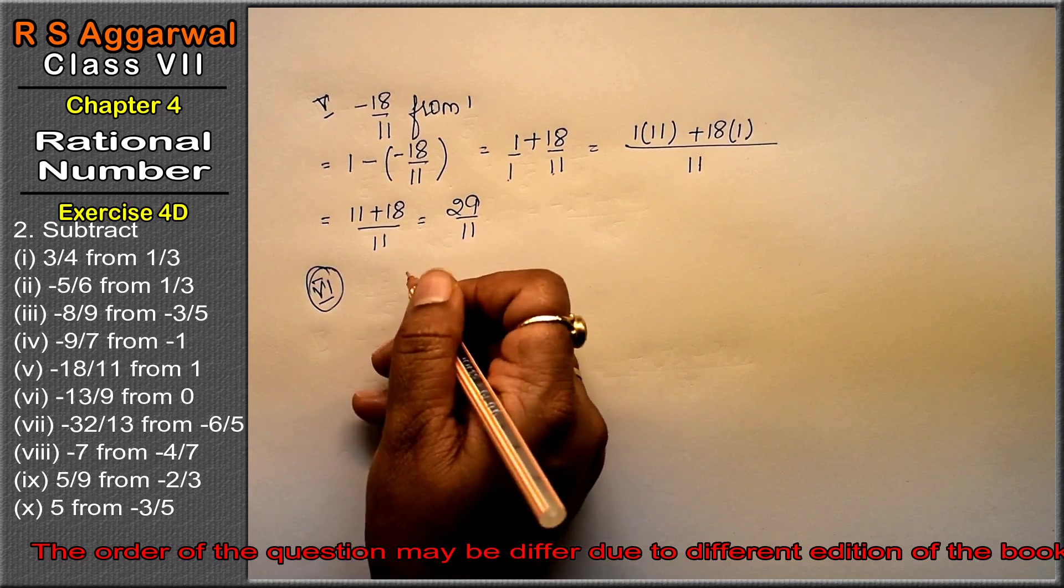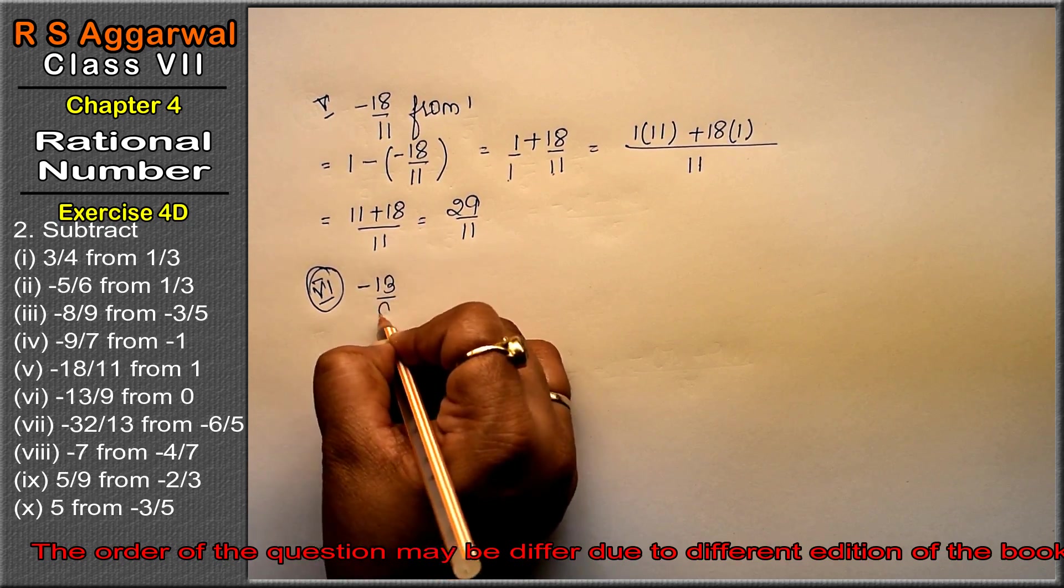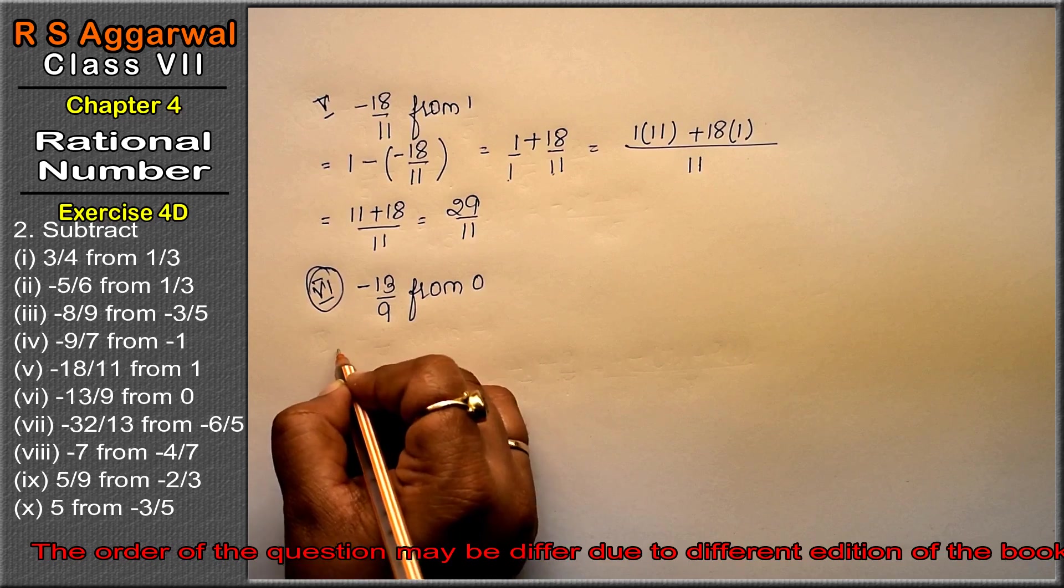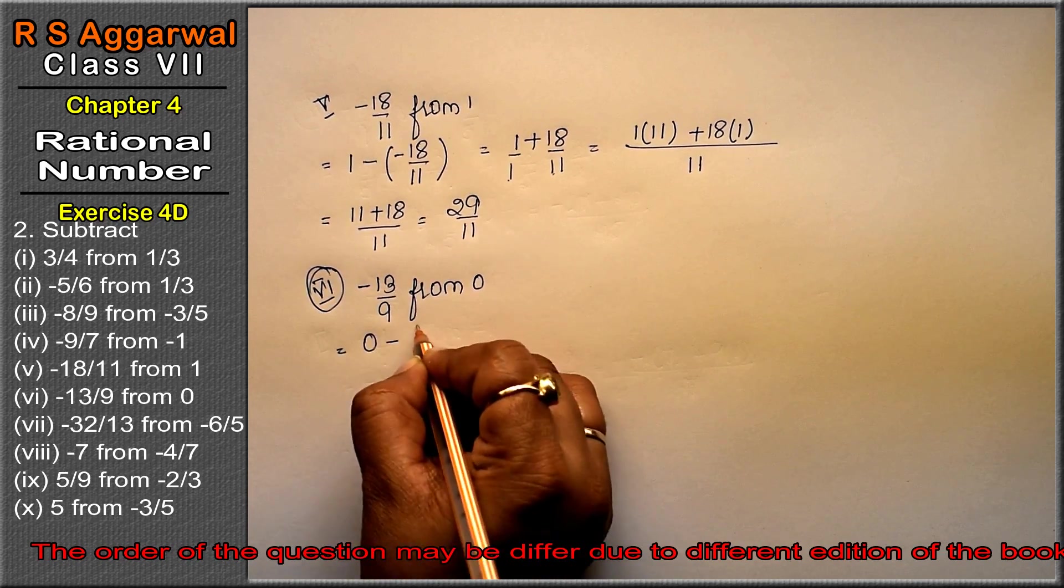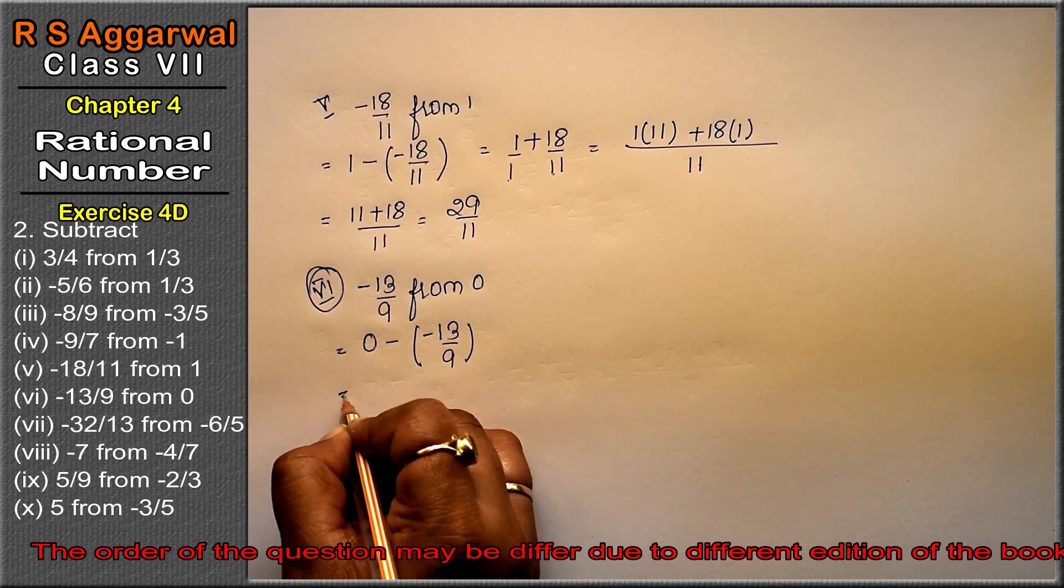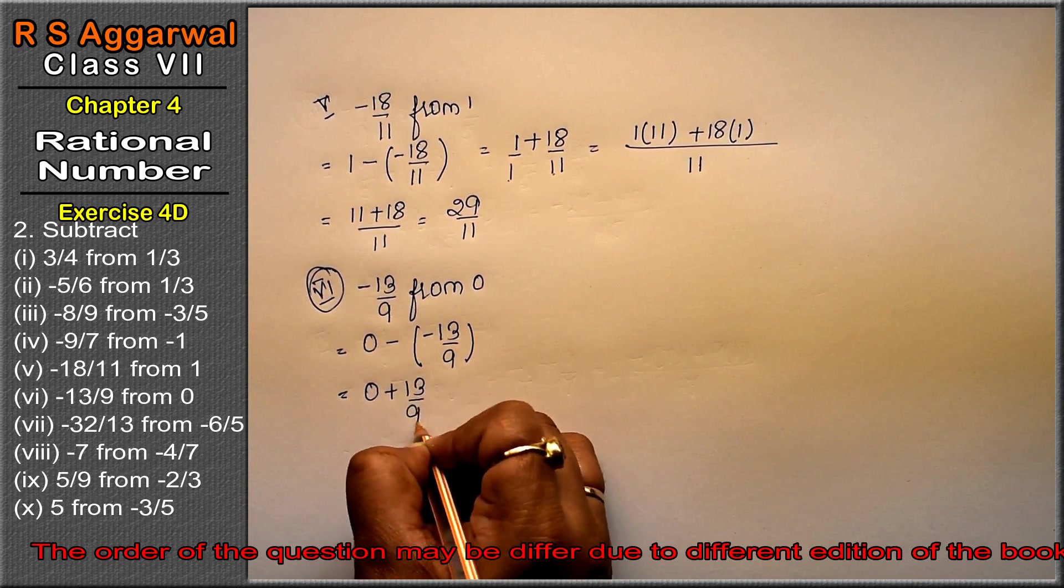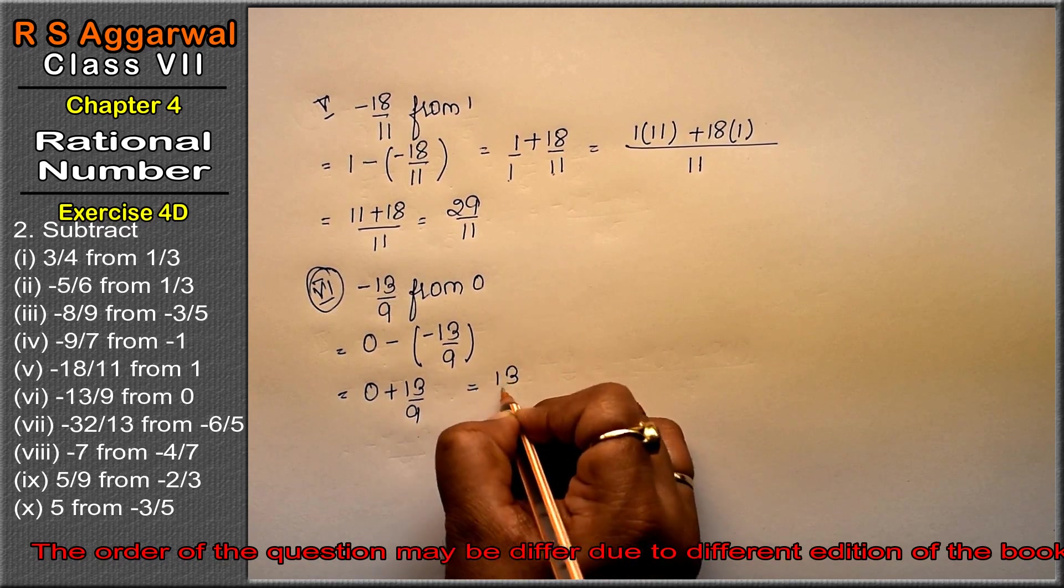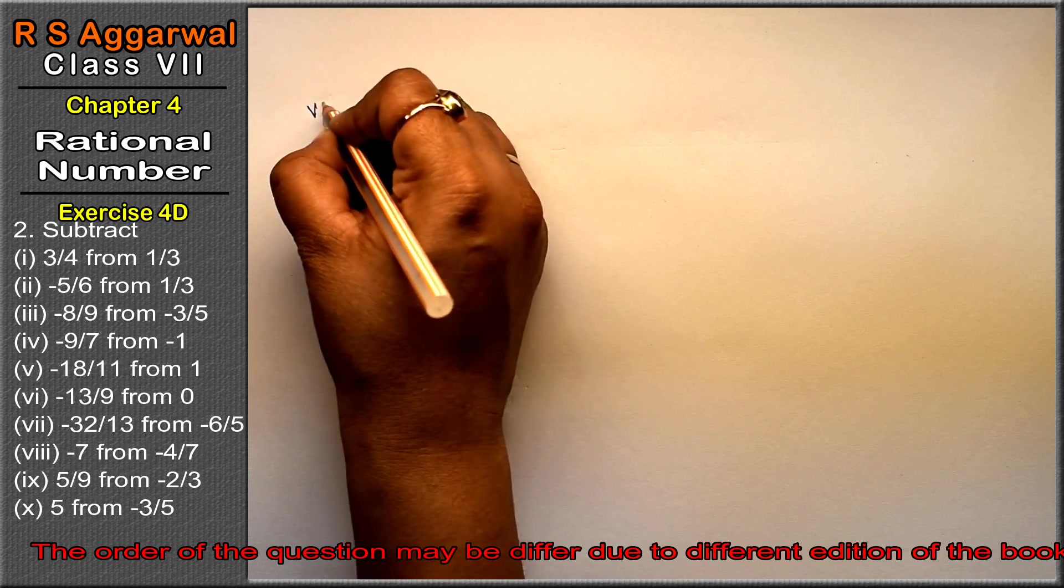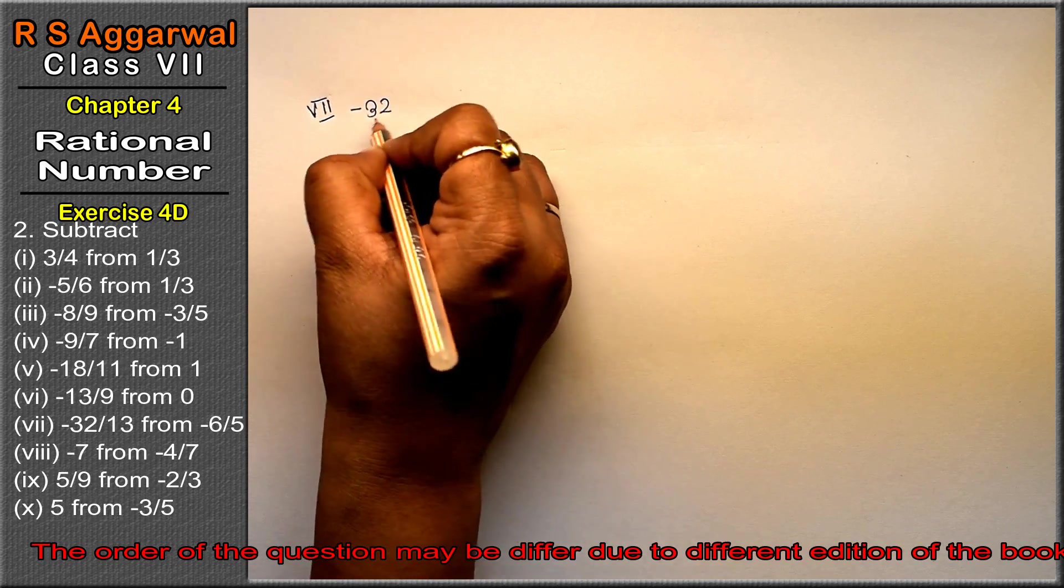Sixth part: subtract minus 13 upon 9 from 0. From 0, so zero comes first. Minus what? Minus 13 upon 9. Minus minus is plus 13 upon 9. Zero added in addition doesn't change anything, so the answer is 13 upon 9.